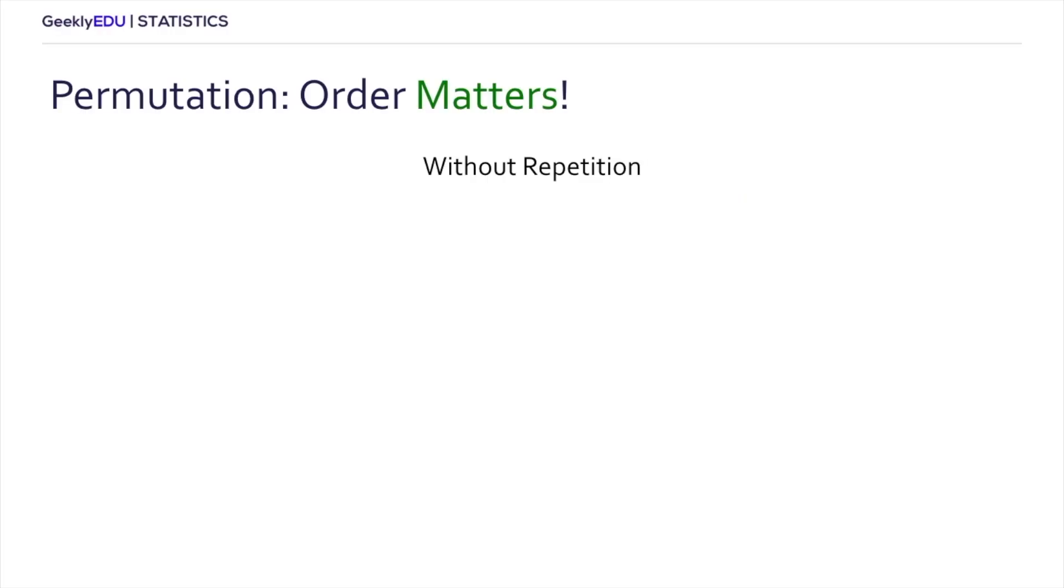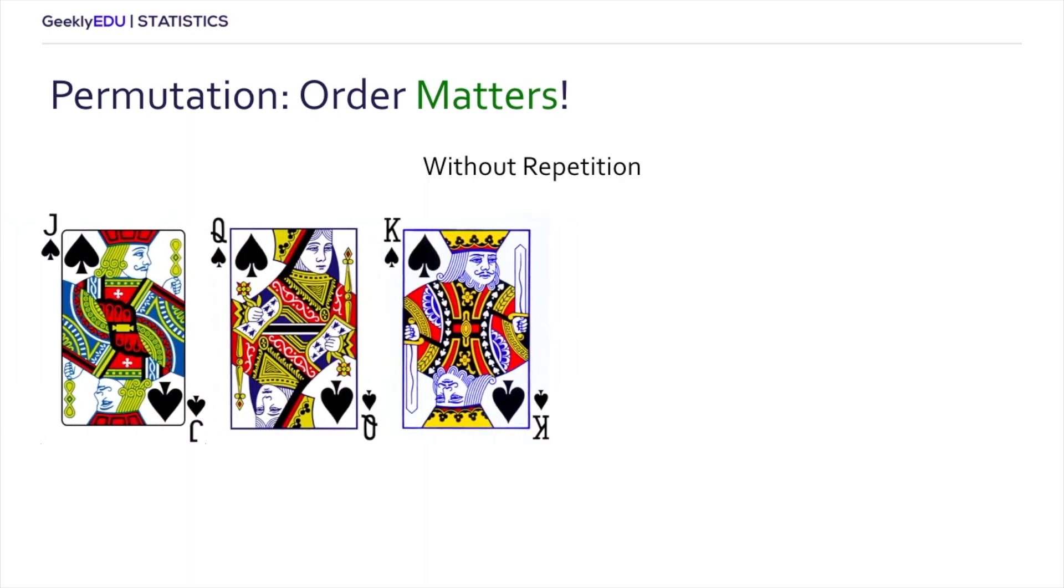We'll start by talking about permutations without repetition. Here I have three cards: the jack, the queen, and the king of spades. Now the question is, how many ways are there to arrange those cards? To answer it, we need to consider what happens every time we draw a card. The first time we have all three cards available to us, however in the second draw we only have two cards available, and only one on the last third draw. Mathematically we can represent that with a factorial where we multiply three by two and by one, and what we get is six, so there's a total of six permutations that are possible with those three cards.